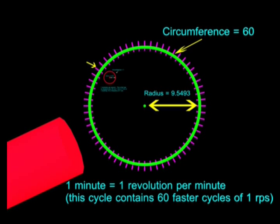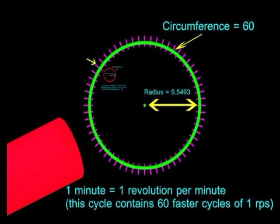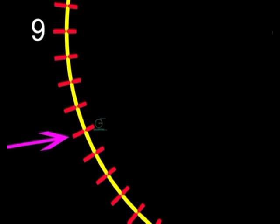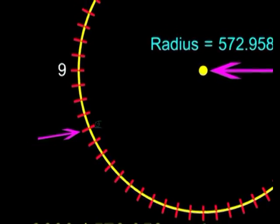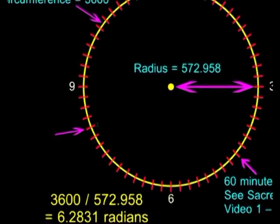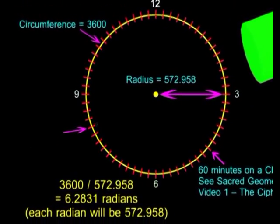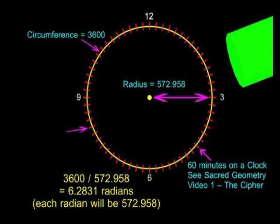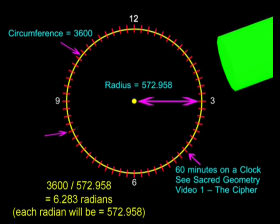This is very similar to the Mayans, who had smaller cycles of time inside much bigger cycles of time. We can zoom out even further into our next cycle, which consists of 60 minutes. Now our circumference has a value of 3600 seconds, or 60 squared. It's 60 minutes times 60 seconds. The radius of this circle will be equal to 572.958, which is exactly equal to the value of one radian, except that it is now one decimal point higher.